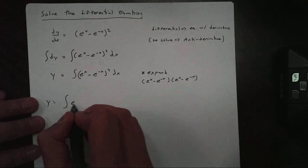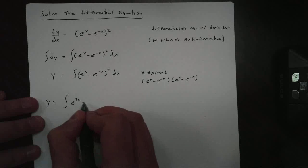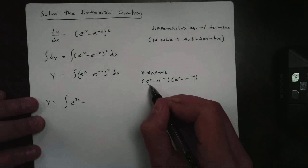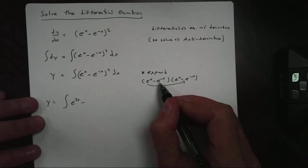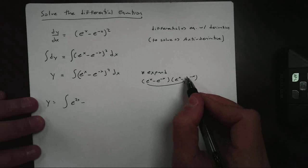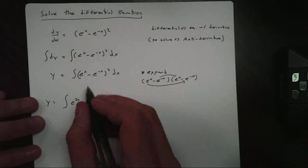This becomes, the first one, e to the 2x minus, now be careful, if I take this e to the x times this e to the negative x, I'm going to add their power and I get e to the 0. But I wind up with two of them.